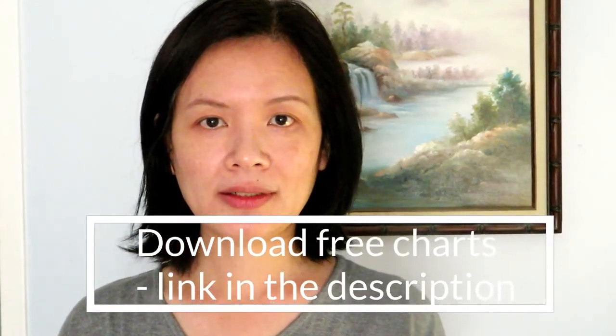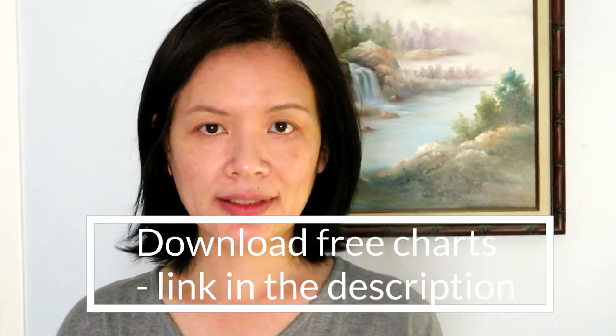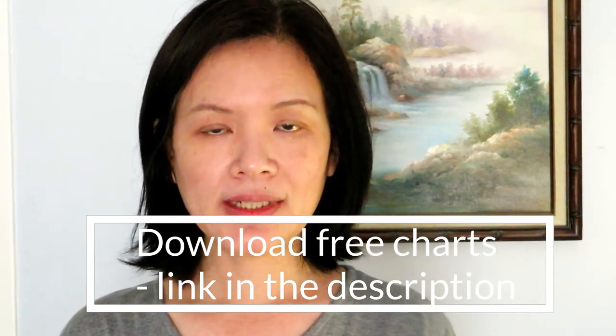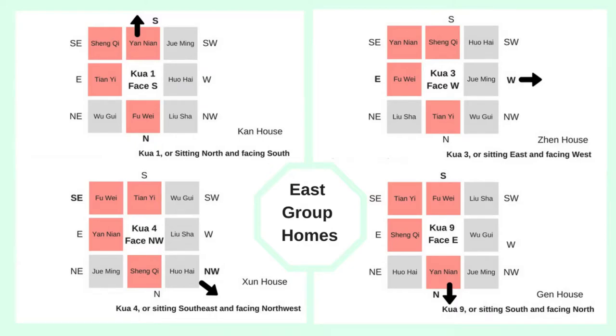Welcome back to Picture Healer channel, this is Shi Tian. Today we are going to talk about the eight mansion style feng shui and the eight different stars and the meaning of each star. There are eight charts in the eight mansion style feng shui, depending on your life gua number or the orientation of your house.